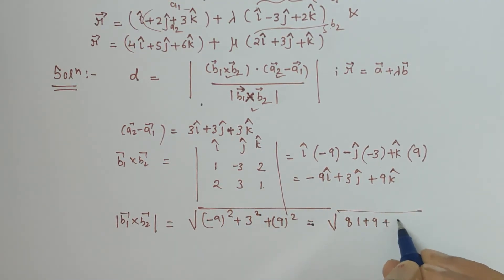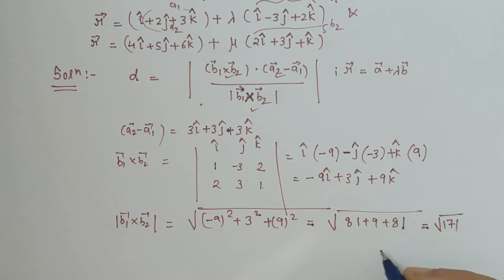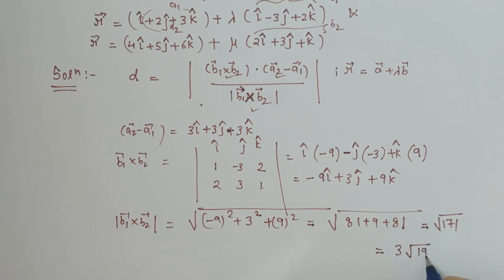Which is equal to under root 171, which is 3 under root 19 when we find its factors.